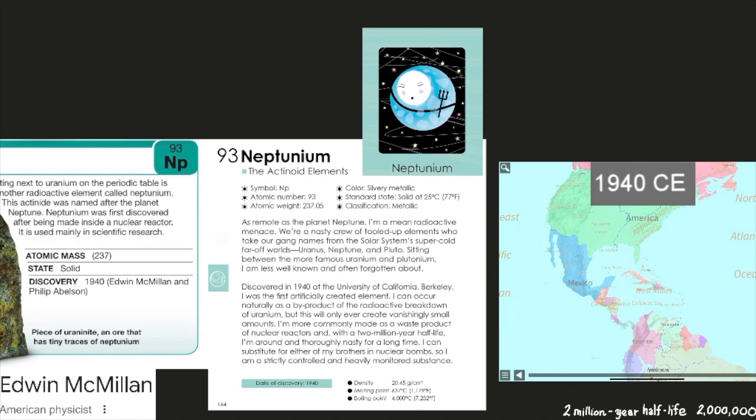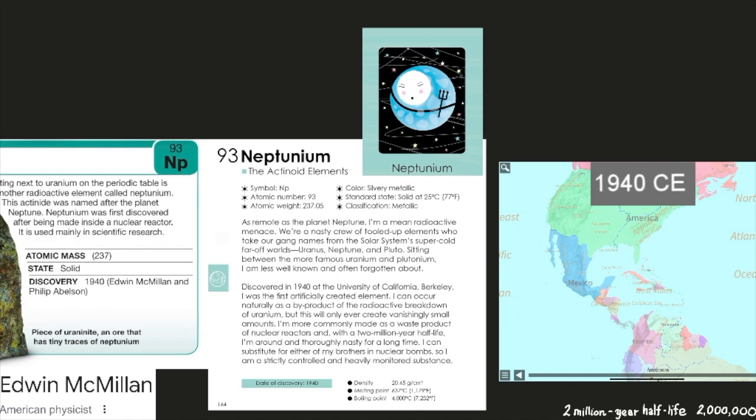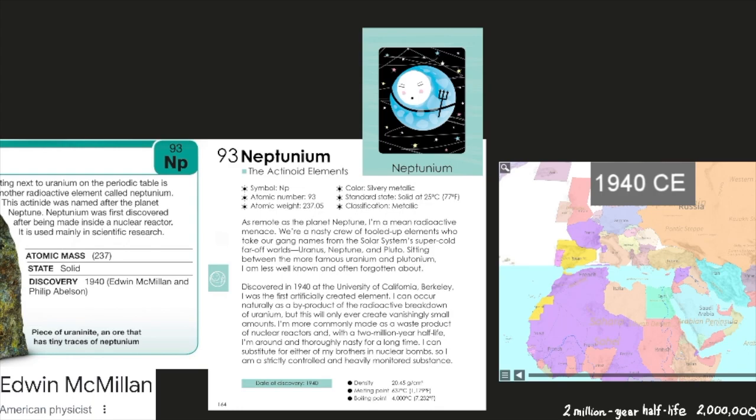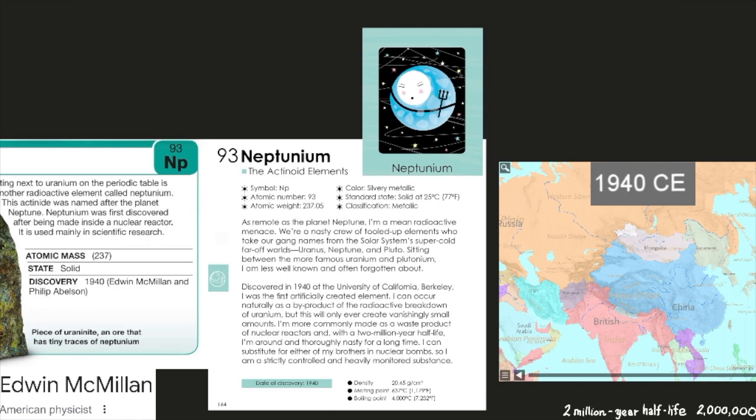Neptune's date of discovery was in 1940. Its density is 20.45 grams per centimeters cubed. Its melting point is 637 degrees Celsius or 1,179 degrees Fahrenheit. Its boiling point is 4,000 degrees Celsius or 7,232 degrees Fahrenheit.